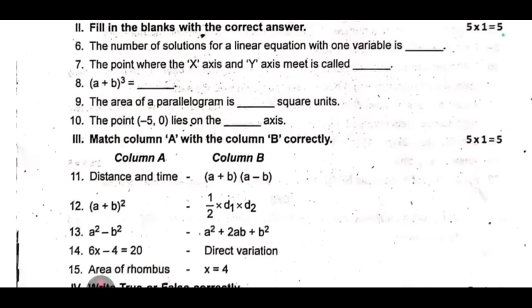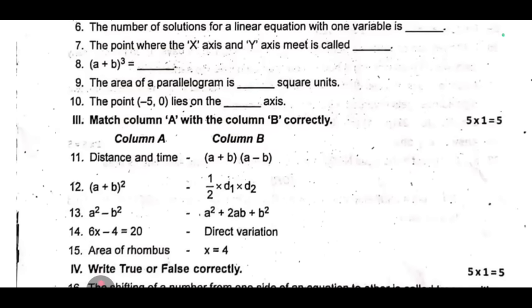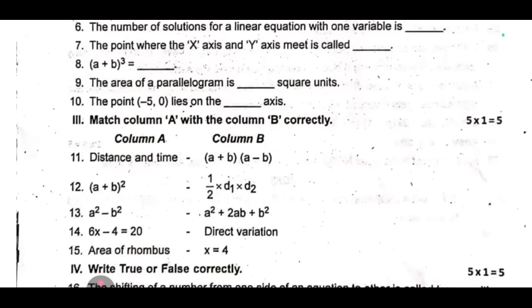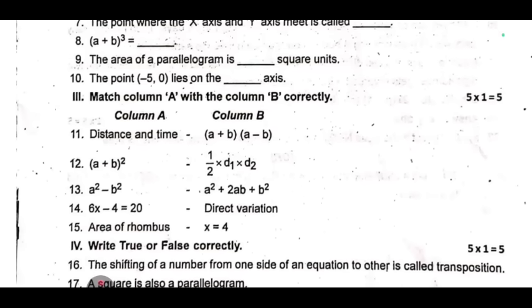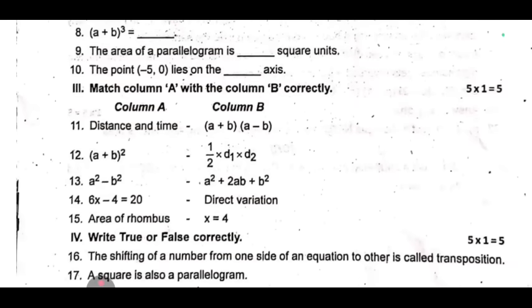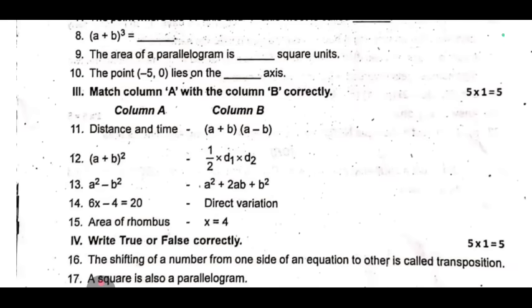Match column A with the column B correctly. Column A: 11. Distance and time, 12. (a + b)², 13. a² - b², 14. 6x - 4 = 20, 15. Area of rhombus. Column B: (a + b)(a - b), a² + 2ab + b², Direct variation, x = 4, ½ × d₁ × d₂.